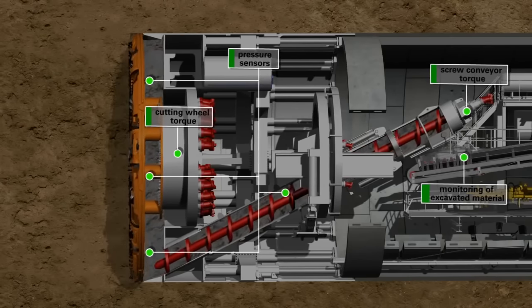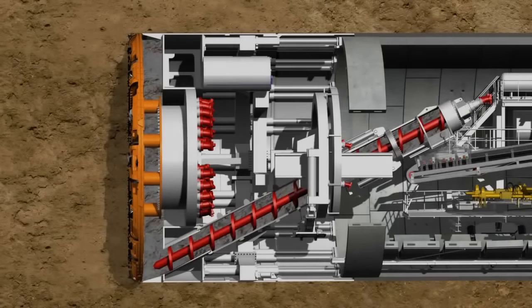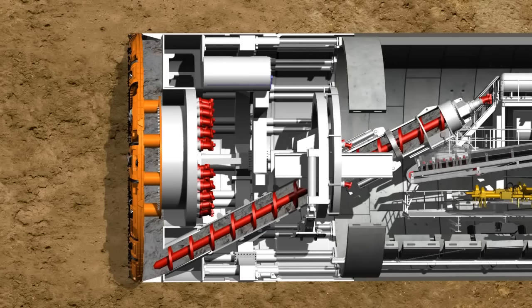When the tunneling phase is completed, cutting wheel and screw conveyor are stopped. Now the ring building phase starts in the shield area under atmospheric pressure conditions.